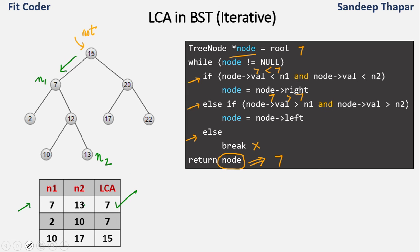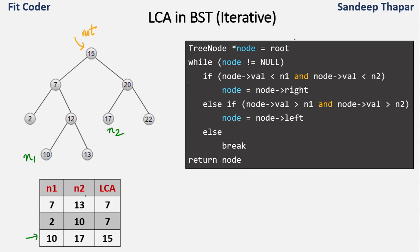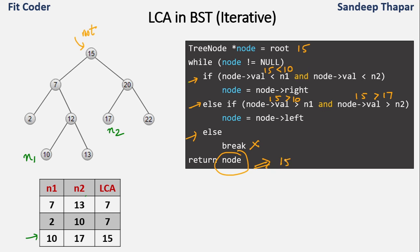For N1=10 and N2=17, node points to 15. We check if 15 is less than 10 — false. We check if 15 is greater than both 10 and 17: 15 is greater than 10 but not 17. One node lies in the left subtree and the other in the right subtree, so we break and return node 15. The LCA of 10 and 17 is node 15.